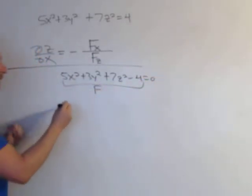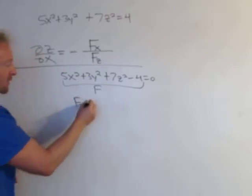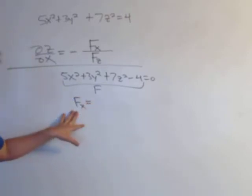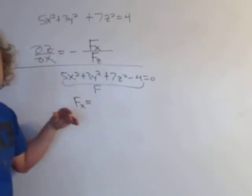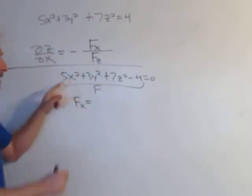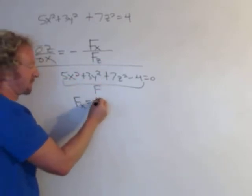Alright, so now f sub x or the partial with respect to x. When we take this derivative, we treat all of the other variables as constants. So we're differentiating with respect to x. That's just going to be 10x. Boom.